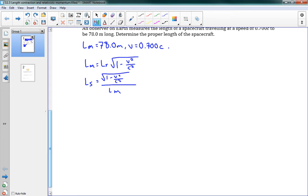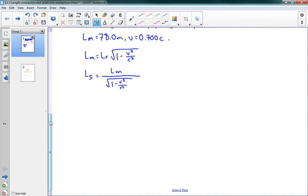I did that backwards, I'm sorry. Ls equals Lm divided by square root 1 minus V squared over C squared. That looks better.